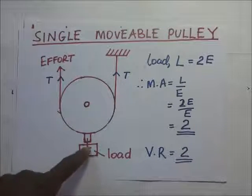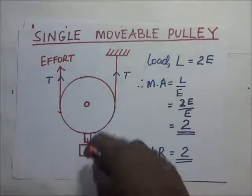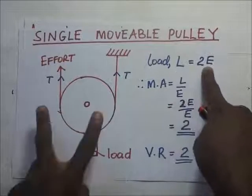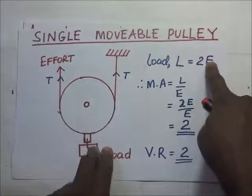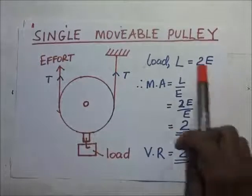That is why we are saying that this load, which is L, is going to be equal to twice effort, because there are two ropes supporting this going upwards. So load is equal to 2E.